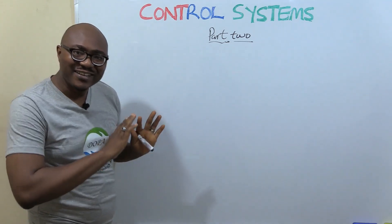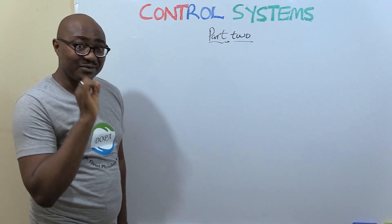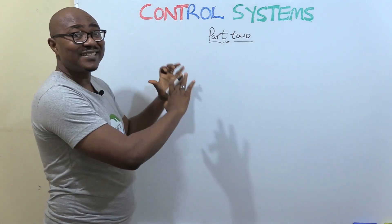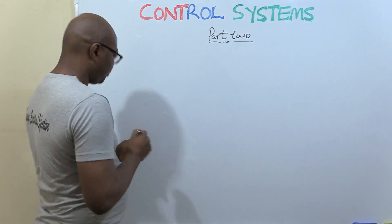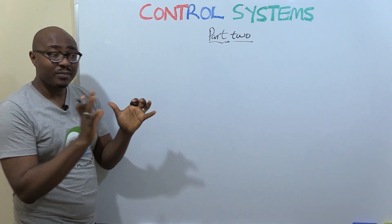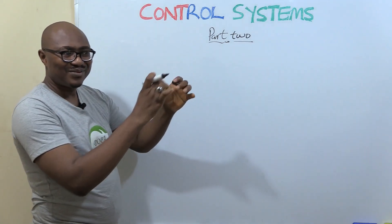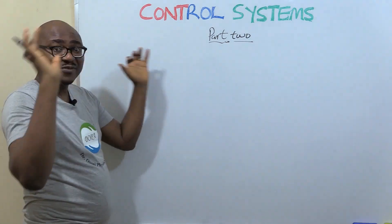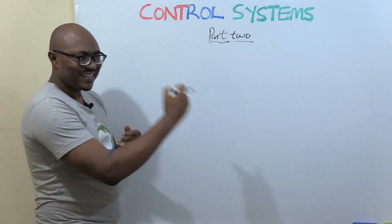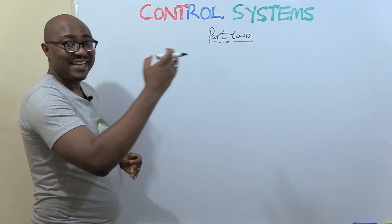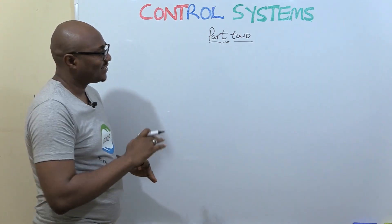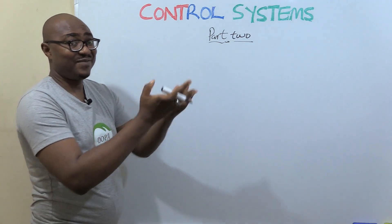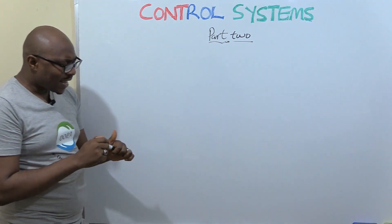Don't forget to turn on notifications so that you don't miss any new content. Now let's get started. Control systems part two — in the previous part we talked about the five components of the control system: the sensor, the input signal or afferent, the control center, the output signal or efferent, and the effector.